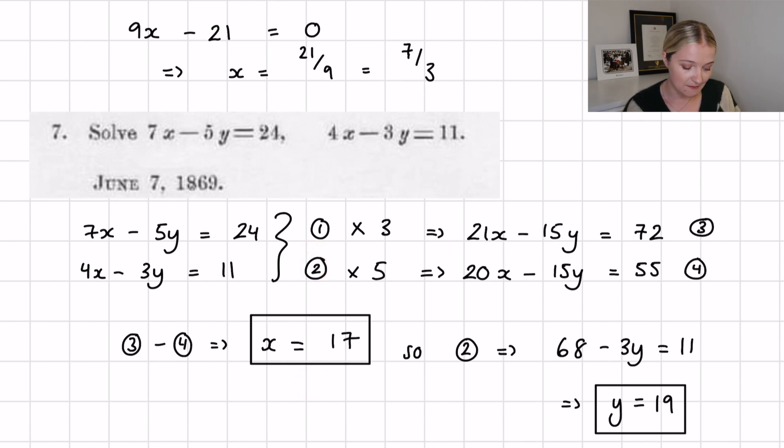Now we want to get the y value for this back, so what we do is we substitute x equals 17 into 2. I did that just because it was the one that I had to multiply the least amount by. I substituted x equals 17 into number 2, and we find that 68 minus 3y equals 11, and so when you simplify that we find that y equals 19. So the answer here is x is 17 and y is 19, and that is the last question on this exam.